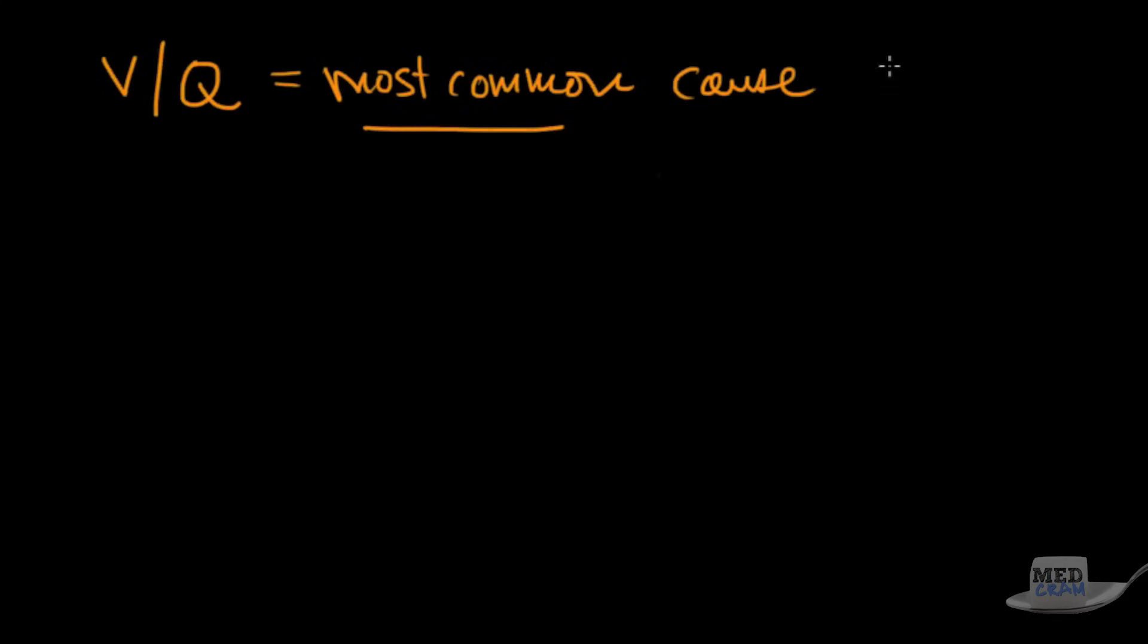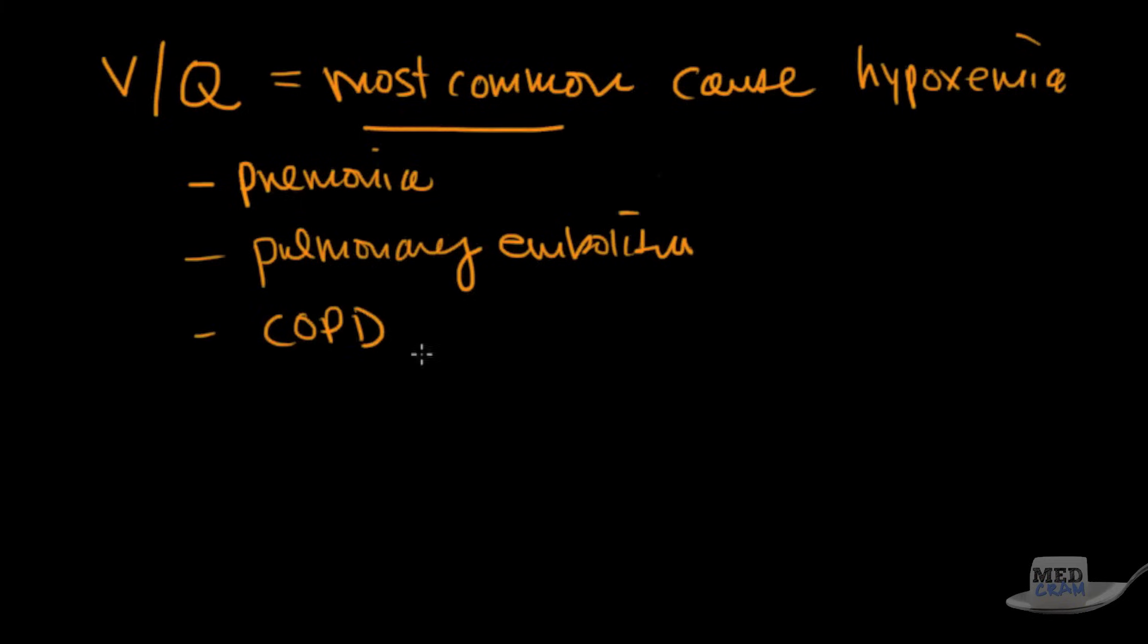Let me show you an example of VQ mismatch. VQ mismatch is the most common - if they ever ask you that on a test it is the most common cause of hypoxemia and the reason for that is because the causes are so common. For instance pneumonia, pulmonary embolism, COPD - all of these are reasons for the patient to have VQ mismatch to the point where if they ever ask you this on a question and you don't know the answer to it and you see VQ mismatch I would select that one.